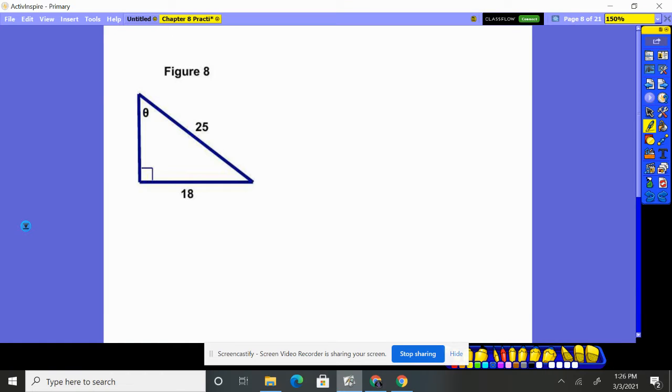Figure eight, right triangle means we're using SOHCAHTOA. Here's my angle. I'm trying to find the angle. I have that over there, which is opposite. And your hypotenuse is 25 because it's across from the right angle there.